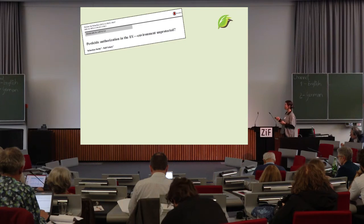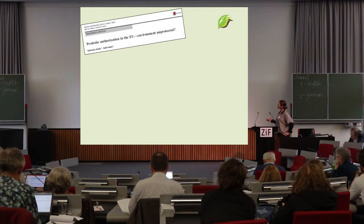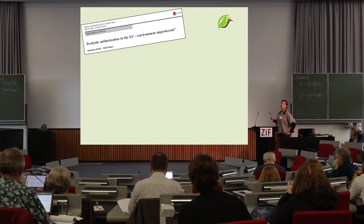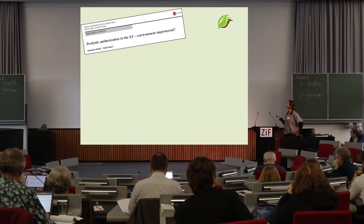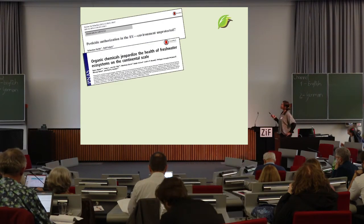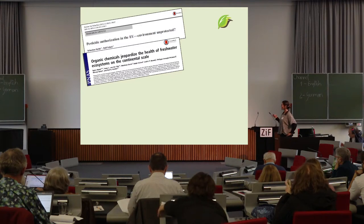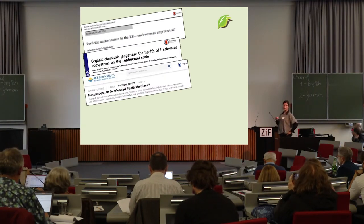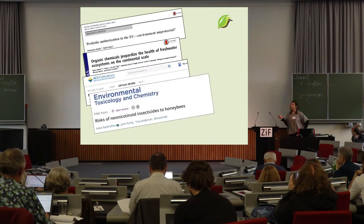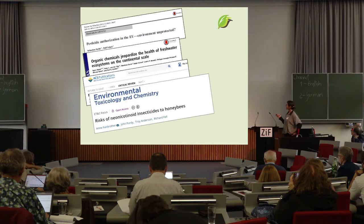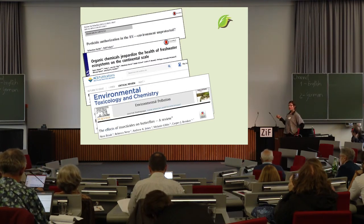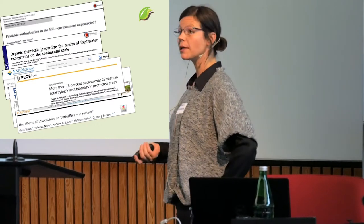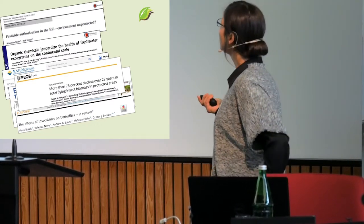Although we have a very good regulation, it is not implemented in practice. Numerous published articles show that pesticide levels in the environment are much higher than predicted by risk assessment, that rivers across Europe have chemicals above levels that produce toxic effects in aquatic organisms, and that neonicotinoids affect honeybees and butterflies. One well-known study shows that 75% of insect biomass disappeared in Germany over 27 years.